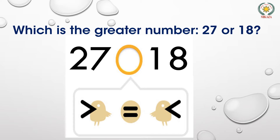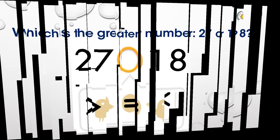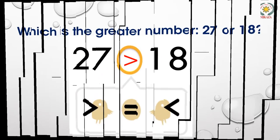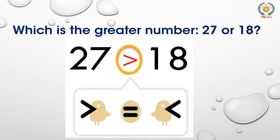We will identify the greater, less, and equal number signs. Which is the greater number: 27 or 18? 27 is greater than 18, so we will give it the greater number sign.